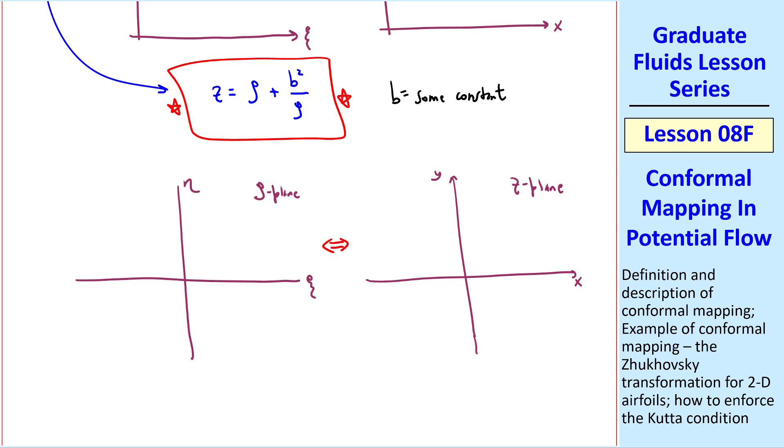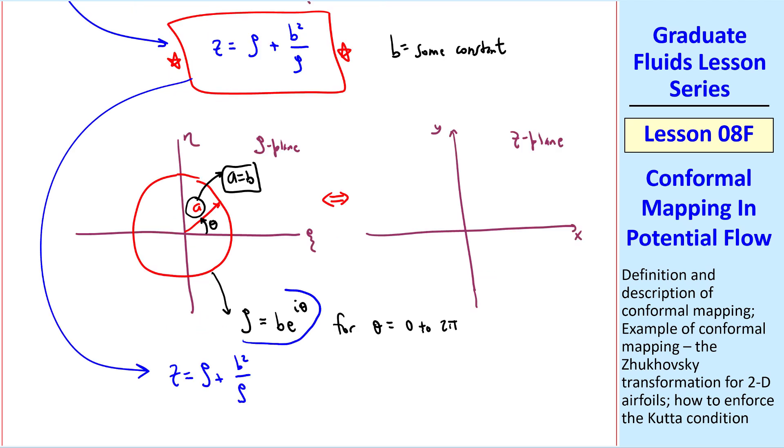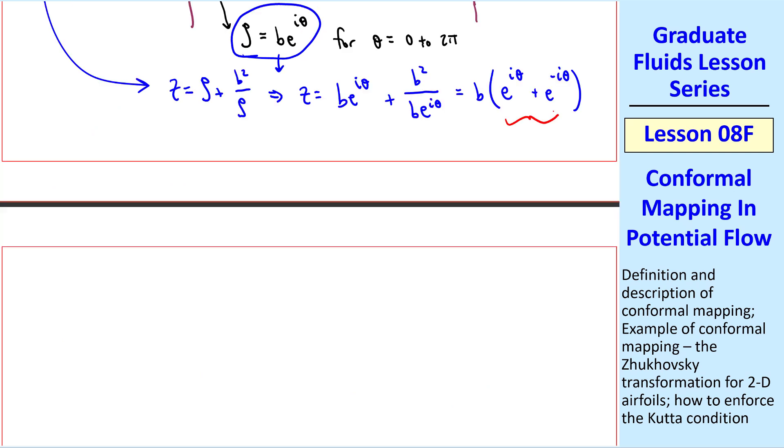Let's do a conformal mapping example using this Joukowsky transformation. Namely, let's draw a circle in the zeta plane with radius a, and let a equal b. And think about how this transformation will map this circle into the z plane. Well, this circle is given by zeta equal b e to the i theta, where theta ranging from 0 to 2 pi. In other words, all the way around the circle. Well, the transformation, when we plug in this for zeta, gives us z equal b e to the i theta plus b squared over b e to the i theta, which we can also write as b e to the i theta plus e to the negative i theta, since this term is in the denominator. Well, you should recognize this as twice cosine theta, since cosine theta is e to the i theta plus e to the negative i theta over 2. Thus, z is 2b cosine theta.